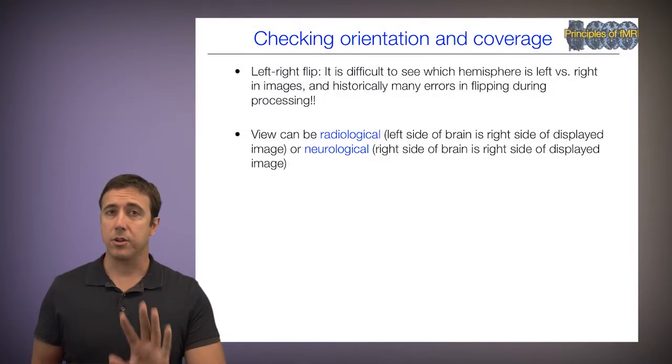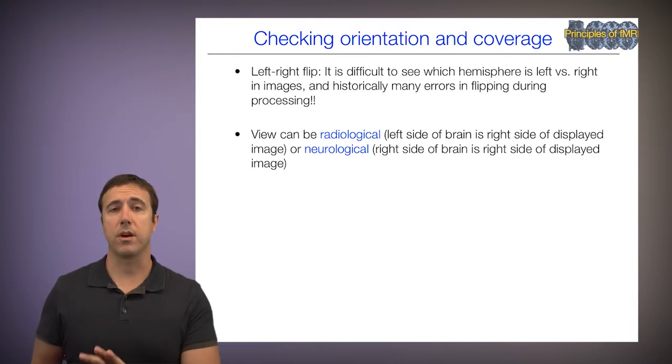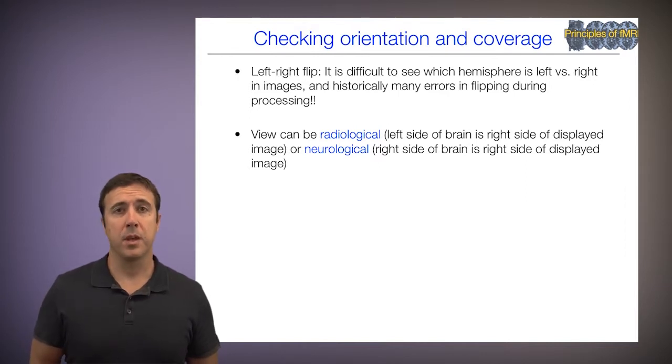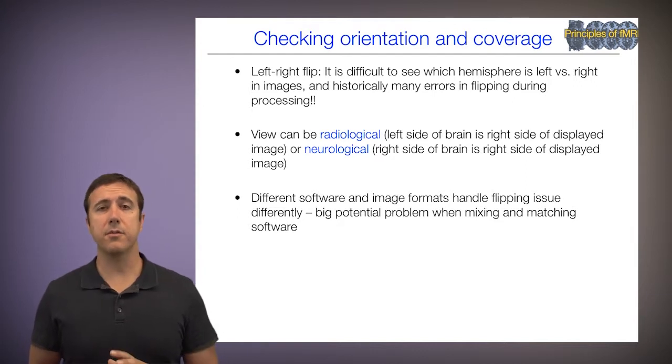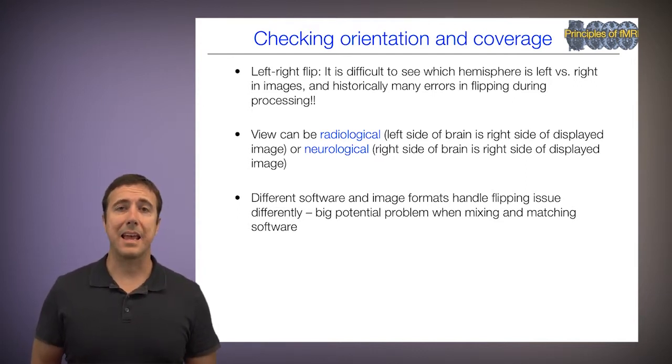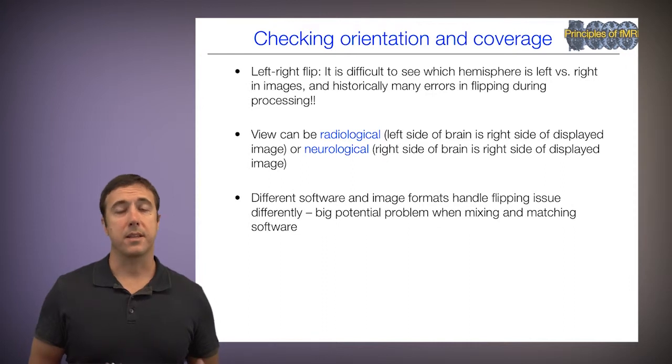First, we'll check orientation and coverage. The left-right flip issue is a key concern — it's difficult to see which hemisphere is left versus right just by looking at the images. Historically, many errors in flipping have occurred during processing. Some have even said we shouldn't analyze older literature for laterality effects, which is extreme but reflects a real problem. The view can follow either radiological convention, where the left side of the brain appears on the right side of the image, or neurological convention, where the right side of the brain is on the right side of the displayed image. Different software platforms and image formats handle this flipping issue differently, especially when mixing and matching software.